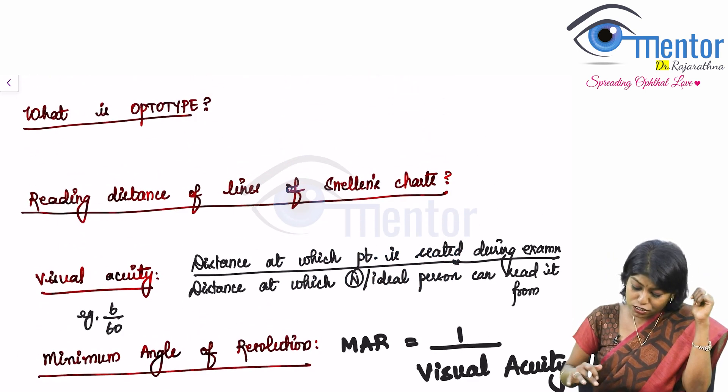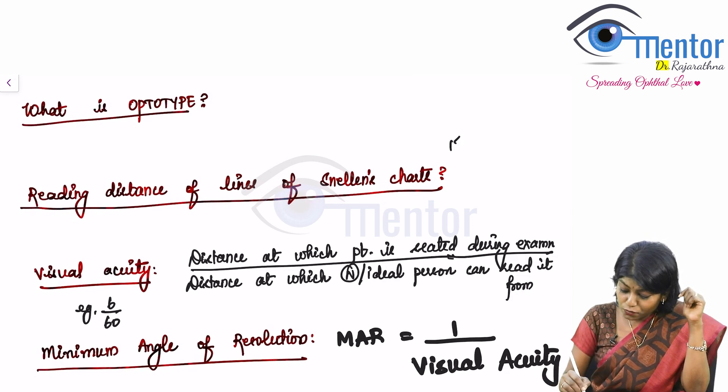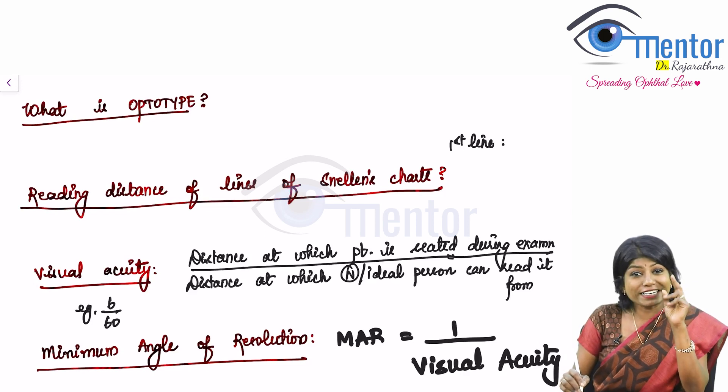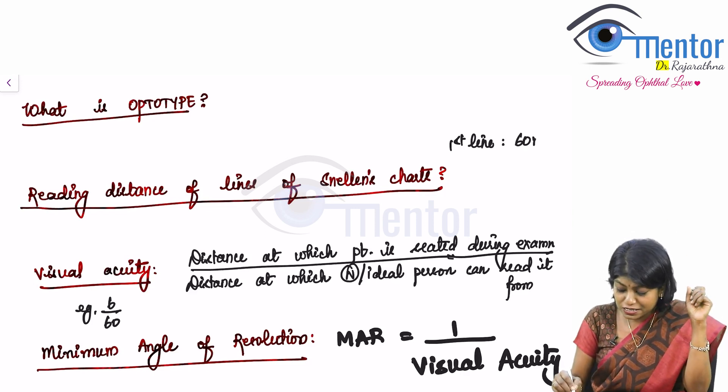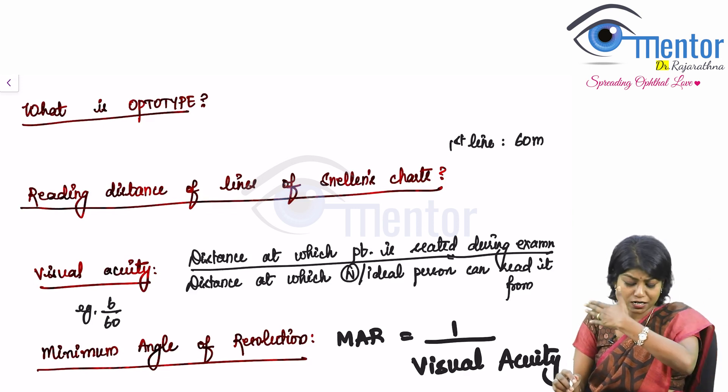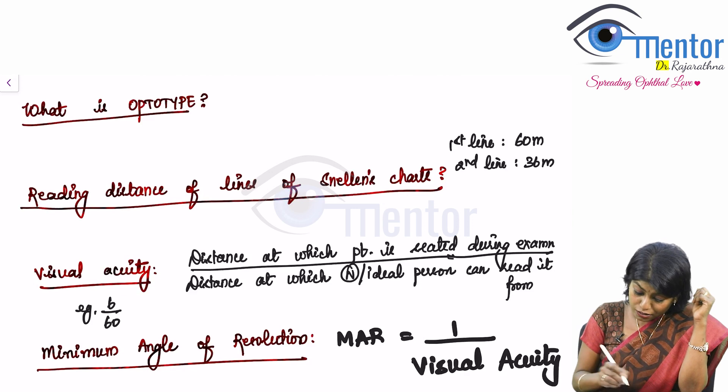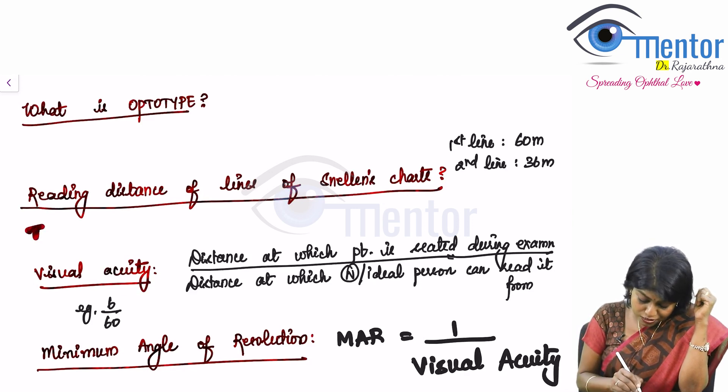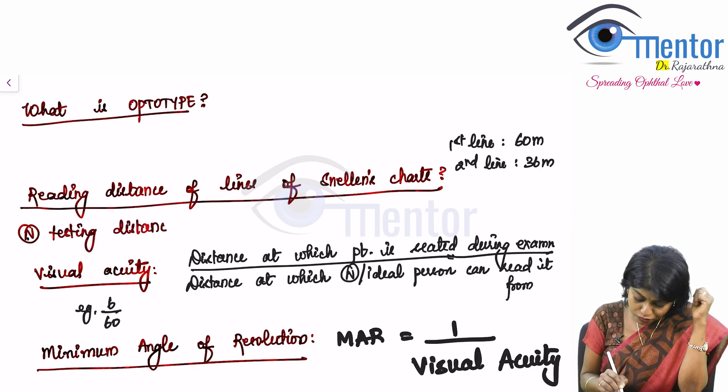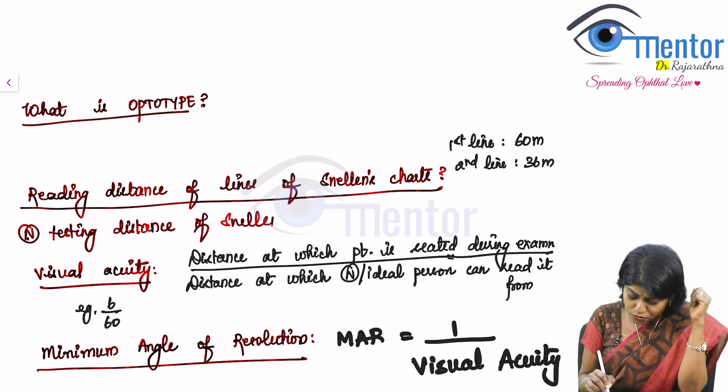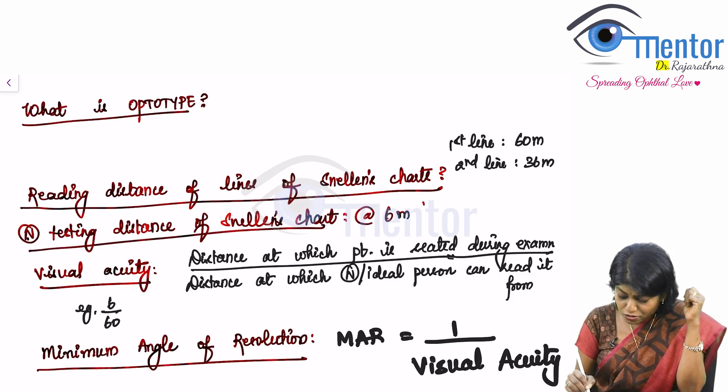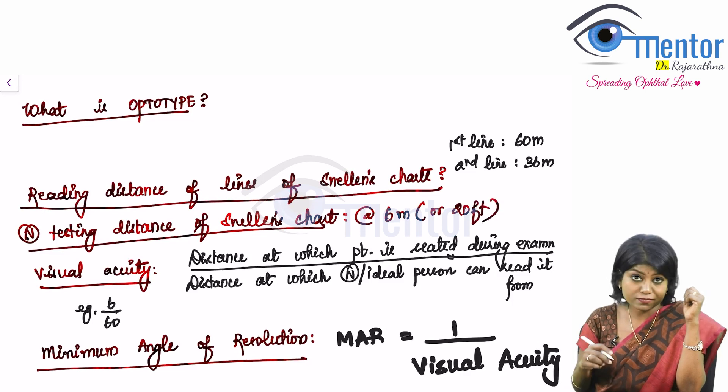Now so what are the reading distances of lines of Snellen Chart? So when you know the first line, it makes sense to know at least the first two lines. The topmost line, 60 meter. That is the denominator. Ideal person stands at 60 meters. Second line, 36 meters. Now there is another question. What is the testing distance? Normal testing distance of Snellen Chart? Snellen chart distance we do it at 6 meters or 20 feet.